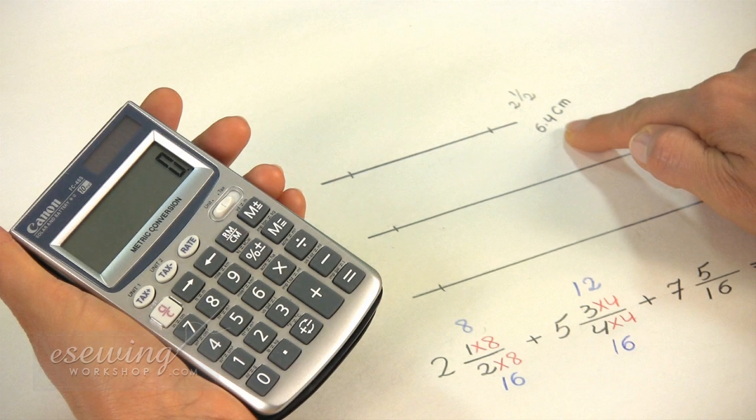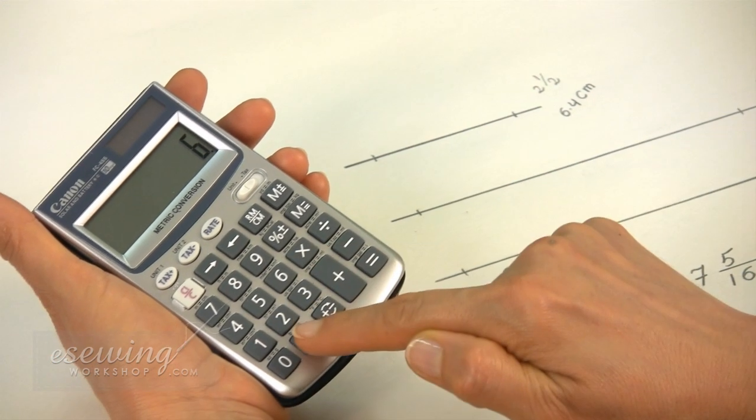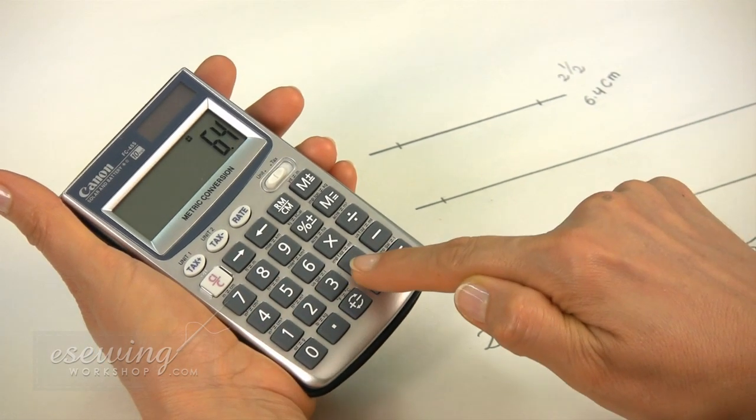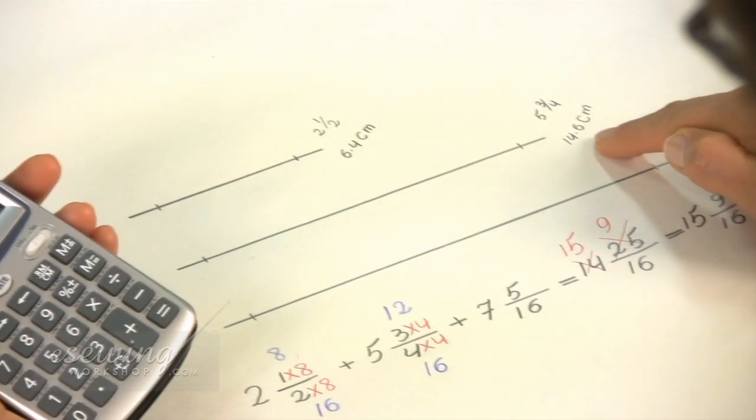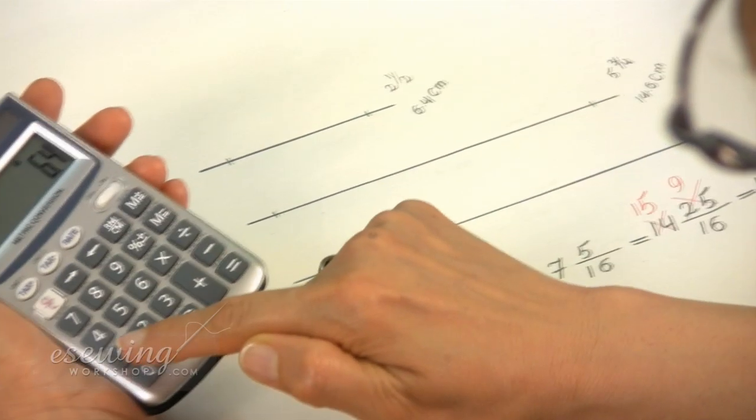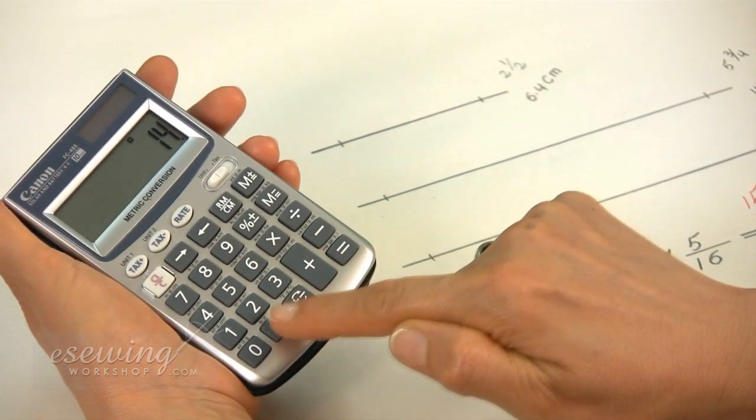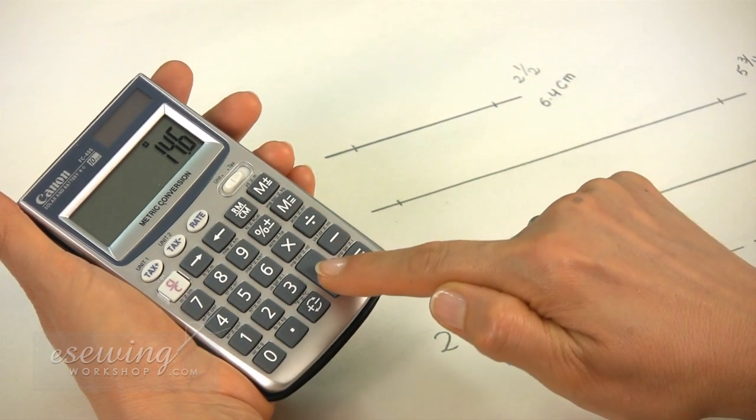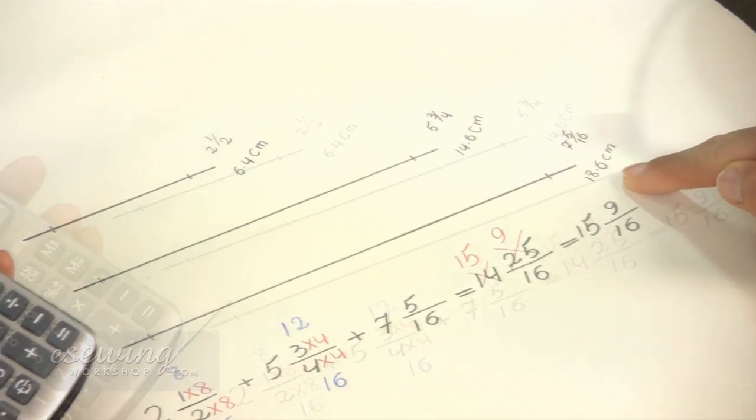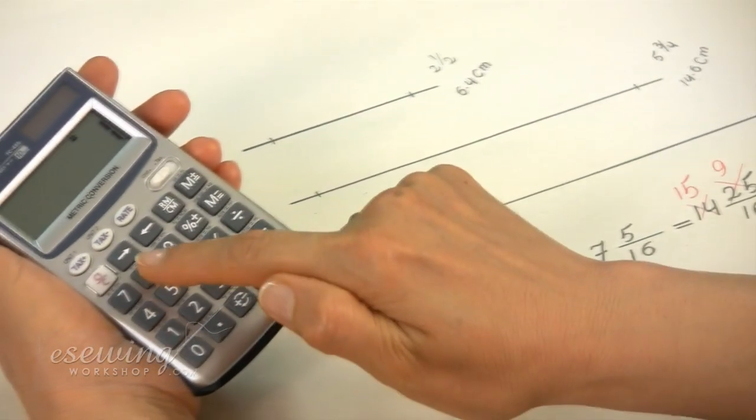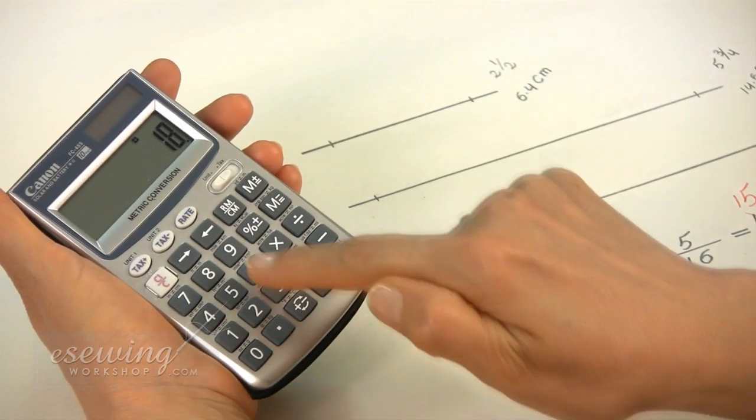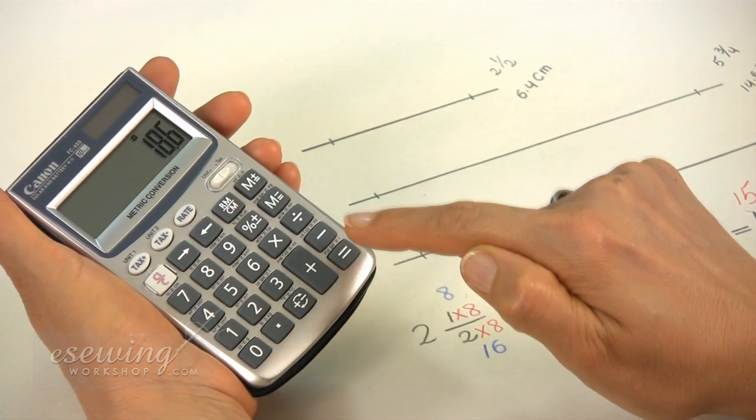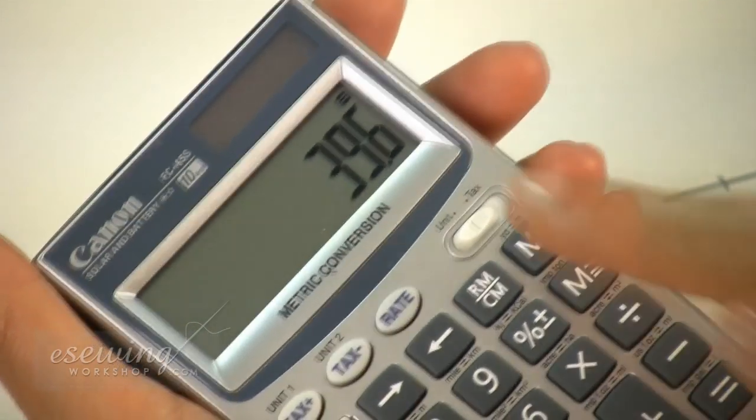Now we will add the numbers for centimeters. Because we are not dealing with fractions we can easily use a calculator. 6.4 centimeters plus 14.6 centimeters plus 18.6 centimeters will give us 39.6 centimeters.